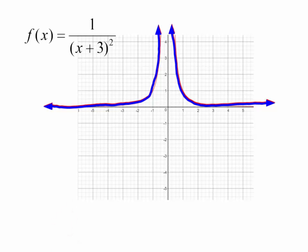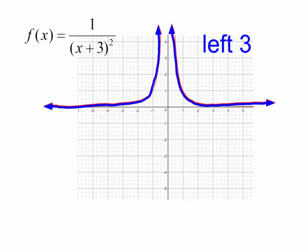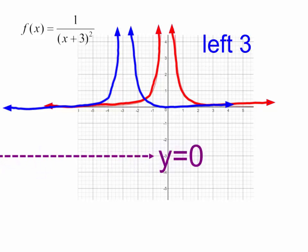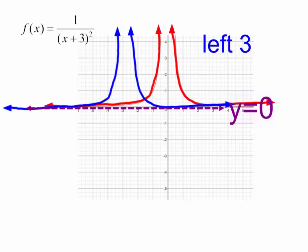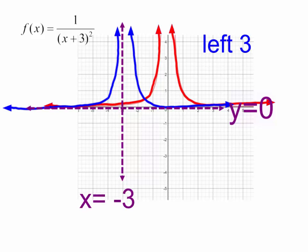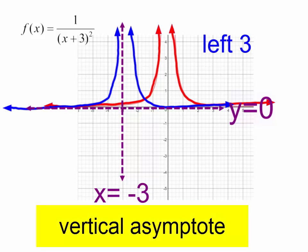Let's talk about this graph: f(x) = 1 over (x+3) squared. This is very similar to f(x) = 1 over x squared, but this has been shifted to the left 3. Remember, when it's inside there with the function, it's right or left, but be very careful — it's opposite of what you may think. So I've got to take this graph and go to the left 3. The horizontal asymptote is still at y equals 0, but the vertical asymptote has changed. It was at x equals 0, but when I moved the graph to the left, my vertical asymptote is now x equals negative 3.